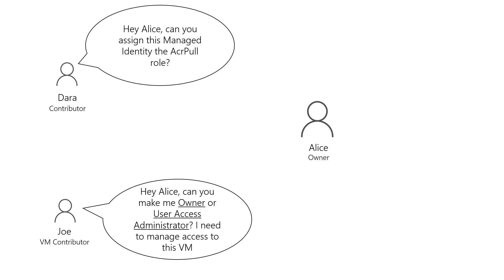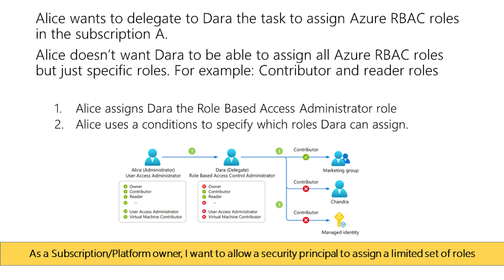What Alice can do is assign Dada the user access administrator or the role-based access administrator role, and then constrain what roles and to what principals she can assign. So in this scenario, we only want Dada to assign the contributor and reader role, and only to groups. So let's see how we can do this in a demo.